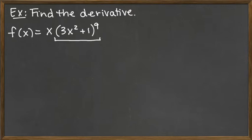However, the thing that makes this a little bit more involved is the fact that we also have an x sitting out front. And so overall, this function is a product, and so we're going to need to use the product rule, but then within the product rule we will need the chain.